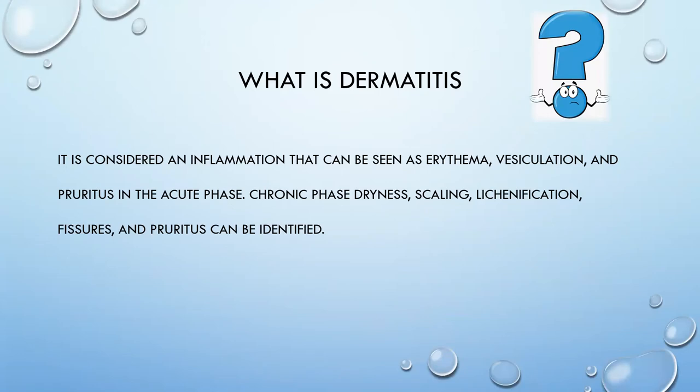Dermatitis is considered an inflammation that can be seen as erythema, vesiculation, and pruritus in the acute phase. In the chronic phase, we can see dryness, scaling, lichenification, fissures, and pruritus.